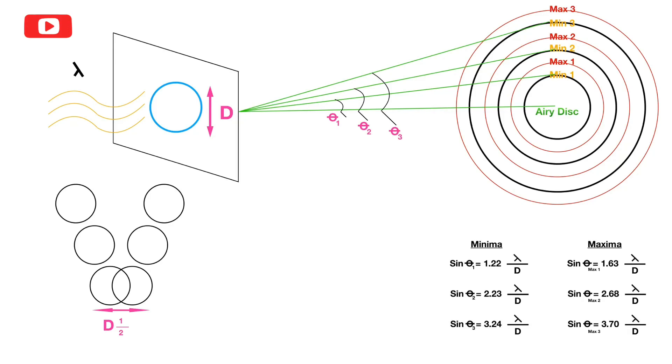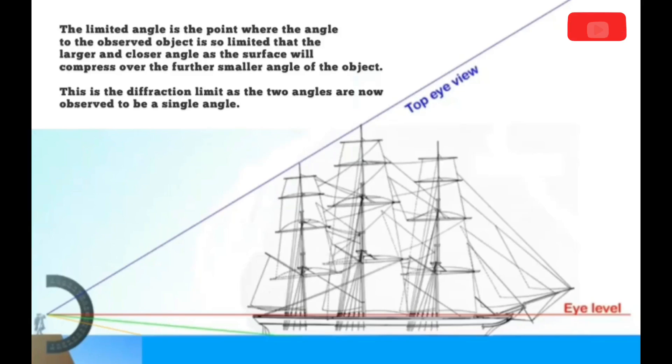And that is where you get your diffraction limit. So that would be the limited angle which is resolvable, and thus you can no longer see anything beyond that marker.